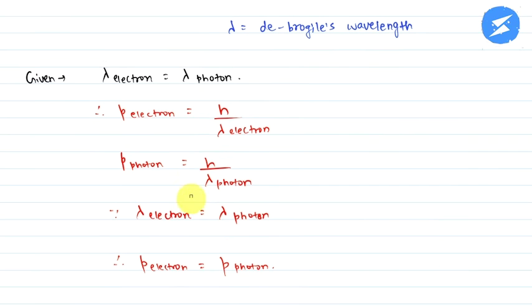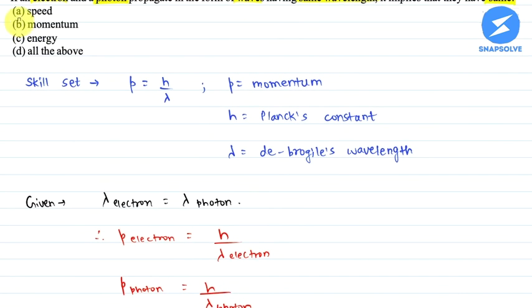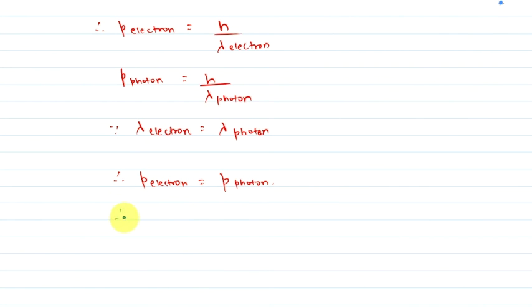Which one of the options is correct? Option B momentum will be the correct answer. Therefore option B momentum is correct.